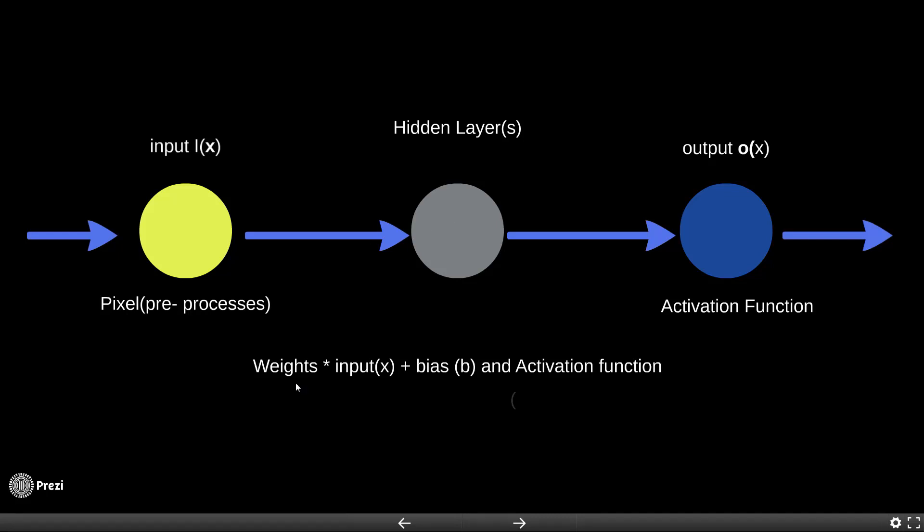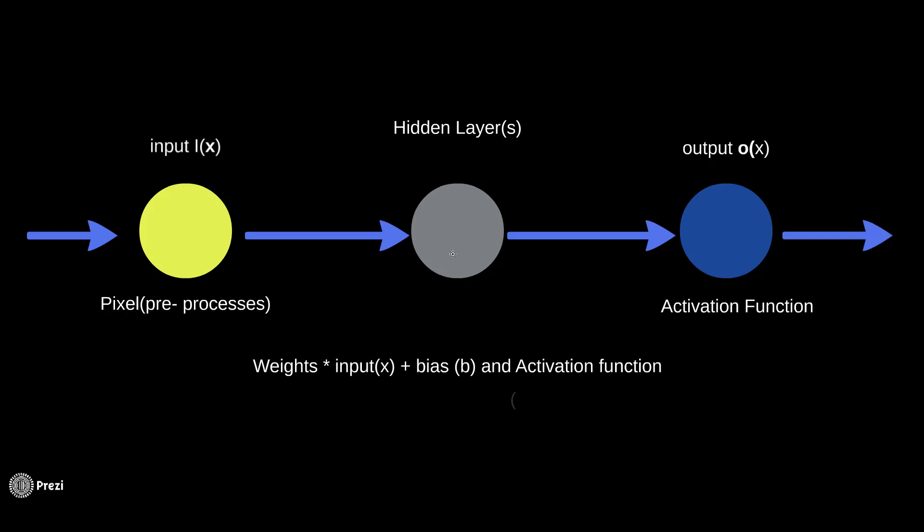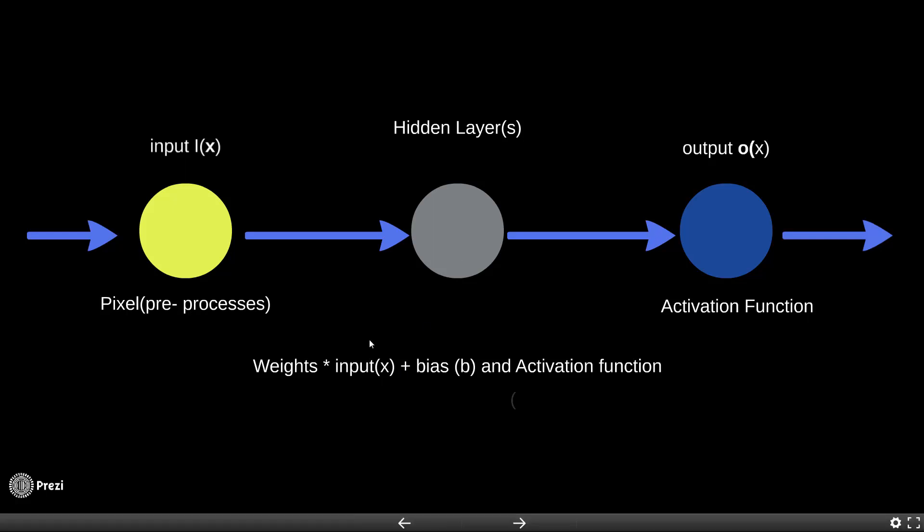The hidden layer has weights multiplied by the input pixel. It adds a bias to it and also passes through an activation function. It decides whether to fire or not to fire depending on this specific output, which is weights times input plus bias.